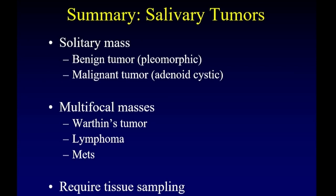Looking back at salivary tumors: a solitary mass is usually benign or malignant tumor — pleomorphic adenoma is the most common benign tumor, and adenoid cystic carcinoma the most common malignant tumor, except in the parotid gland where mucoepidermoid carcinoma comes out slightly ahead. For multifocal masses, think about Warthin's tumors, lymphomas, and metastatic disease. Unfortunately, it is very difficult to distinguish between these entities radiologically — many images look alike, and sometimes even an aggressive tumor cannot yield a specific diagnosis. Tissue sampling is required to make a specific diagnosis.